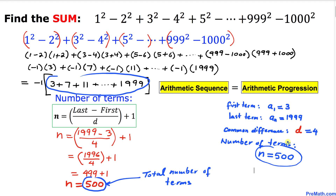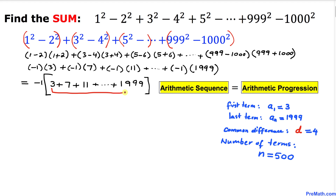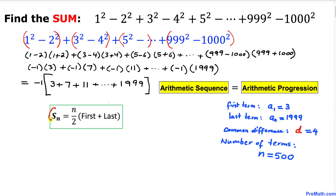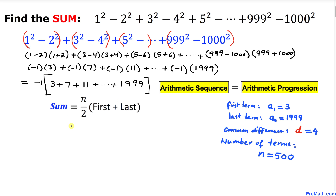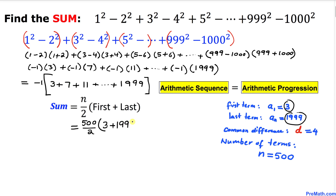Now for the final step: finding the sum of all 500 terms. We use the formula S_n = (n / 2) × (first term + last term). With n = 500, first term = 3, and last term = 1999, we get: S = (500 / 2) × (3 + 1999).